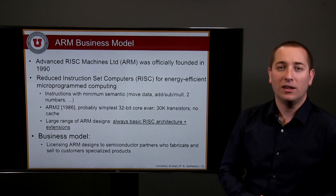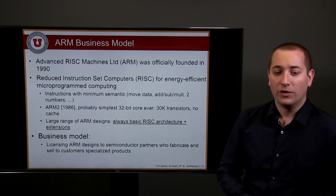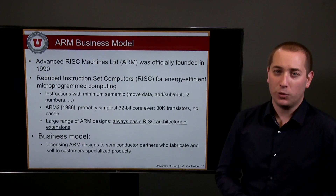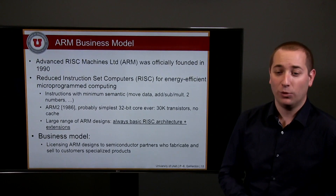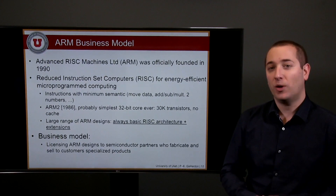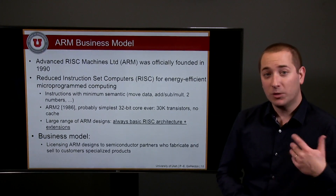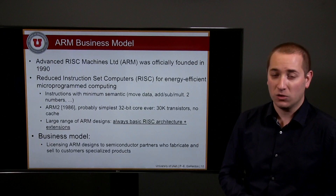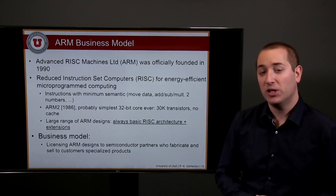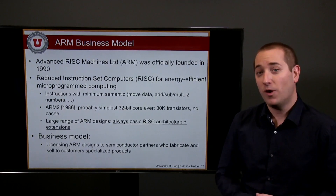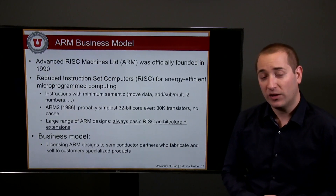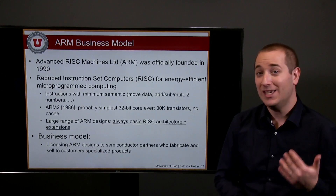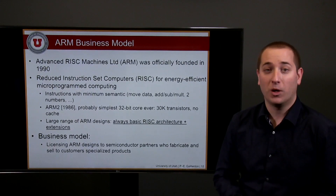Back in the end of the 80s, the ARM2 architecture was probably the first and simplest 32-bit core ever, with only 30,000 transistors and no cache. Nowadays, ARM has evolved with many different architecture variations suited to a wide range of computing needs, starting from very low-power processors — the Cortex-M architecture — going to very highly complex architectures like the A-Series, currently used in most smartphones.